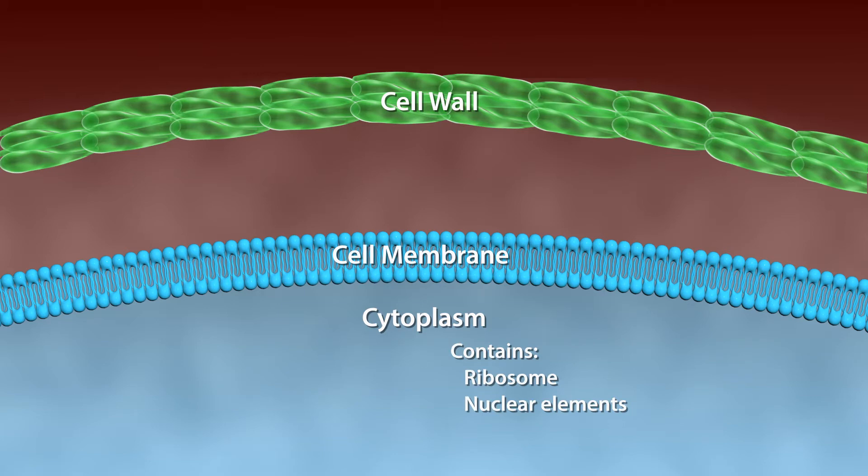In bacteria, the gap between the cell wall and the cell membrane is called the periplasmic space, where metabolic digestion and synthesis of new cell peptidoglycan occurs.